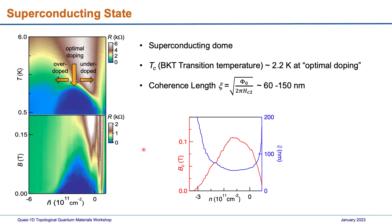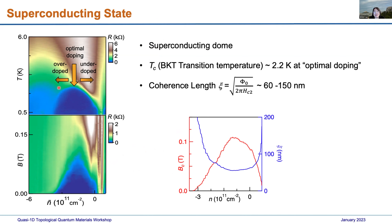Question from audience: To the left of the superconducting dome there appears to be an additional resistive dome — what is that? Response: I'm not sure if it's real; it can sometimes be misleading from the color scale. There's probably something real there, but I don't know what it is.